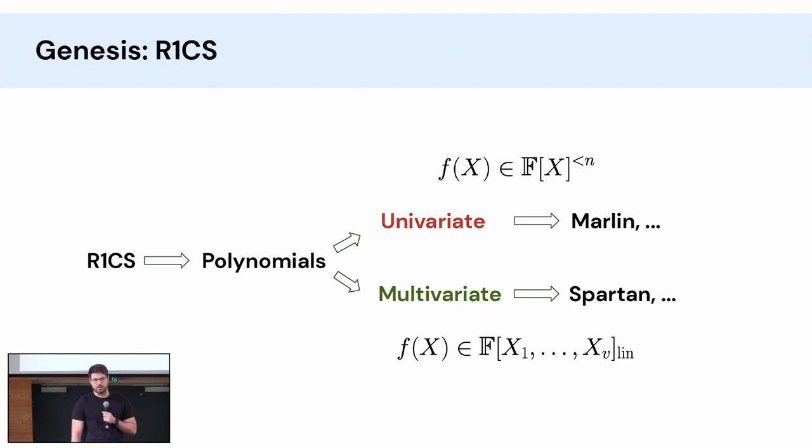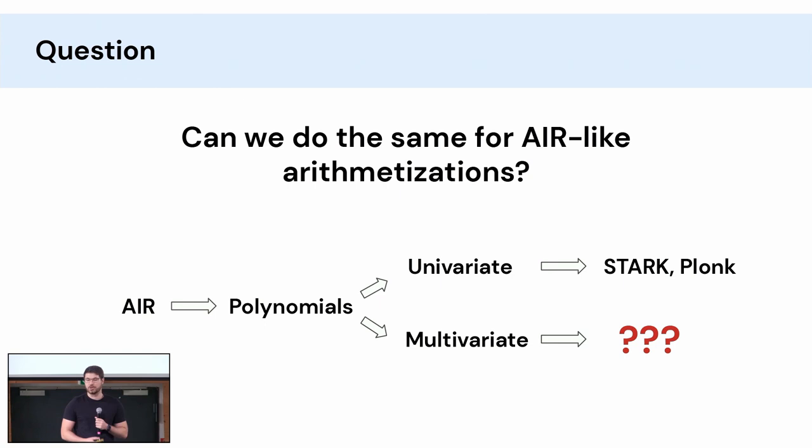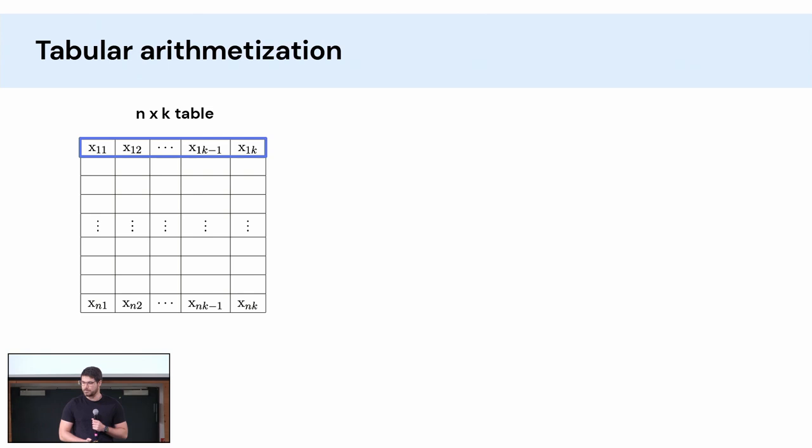So the genesis of this work is R1CS. When you have an R1CS instance, first thing you do is transform it into polynomials. Either you interpolate the polynomials into univariate polynomials and then you get stuff like Marlin which uses a univariate sum check argument, or you can interpret them as multivariate polynomials and you get something like Spartan which uses a multivariate sum check argument. And so my question was can we do the same for AIR-like arithmetizations? And by AIR-like I mean AIR, so stuff like in STARKs but also PLONK.